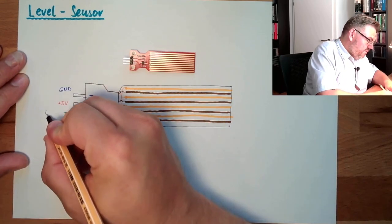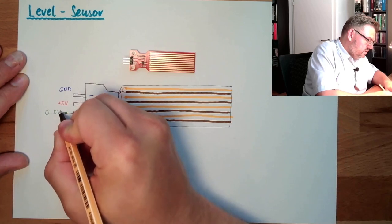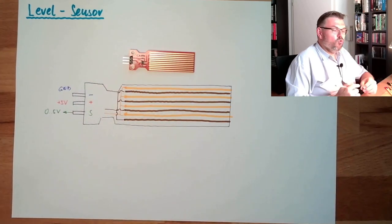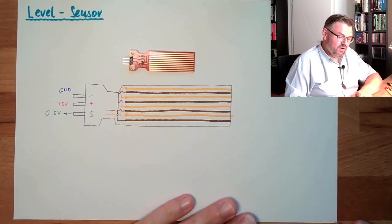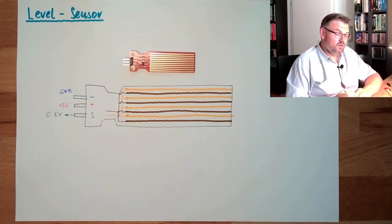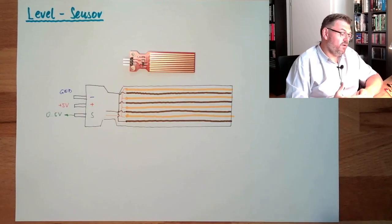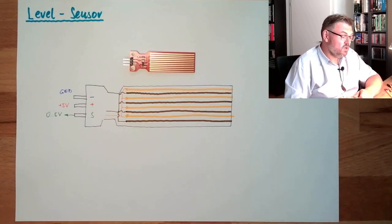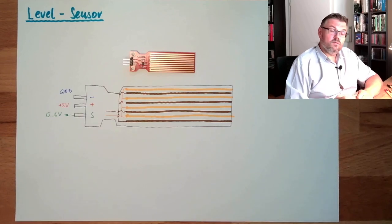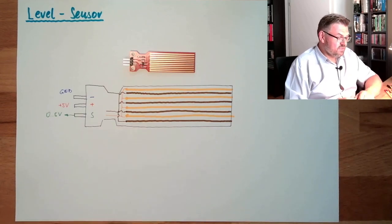This is something between zero and five volts, depending on how good those two things are interconnected already. Very high voltage means good connection, very low voltage means bad connection, zero volts means no connection at all. This is how this is working.